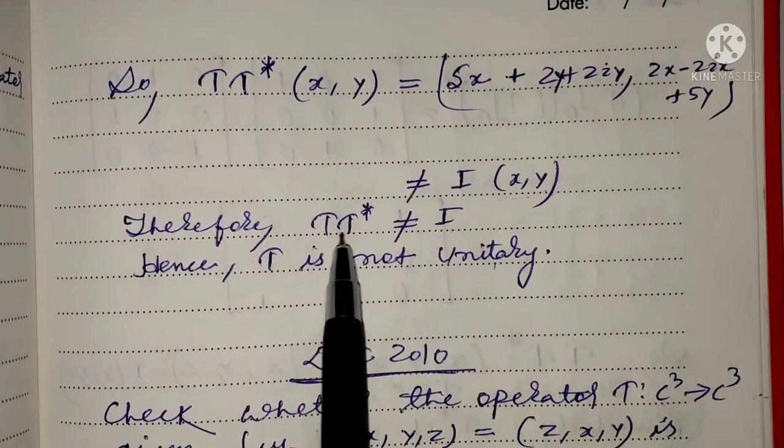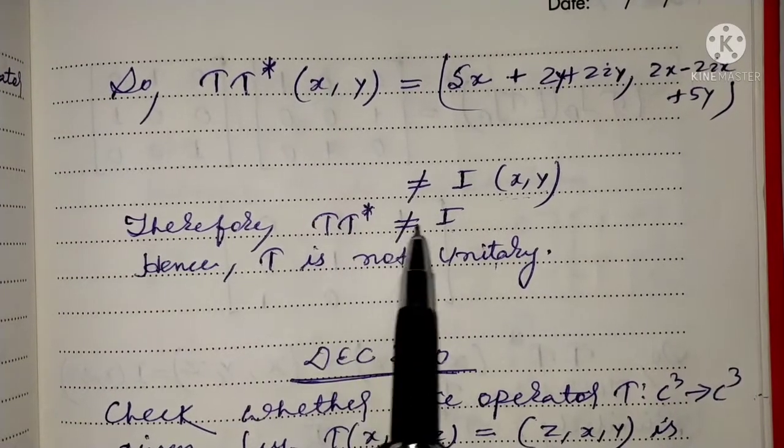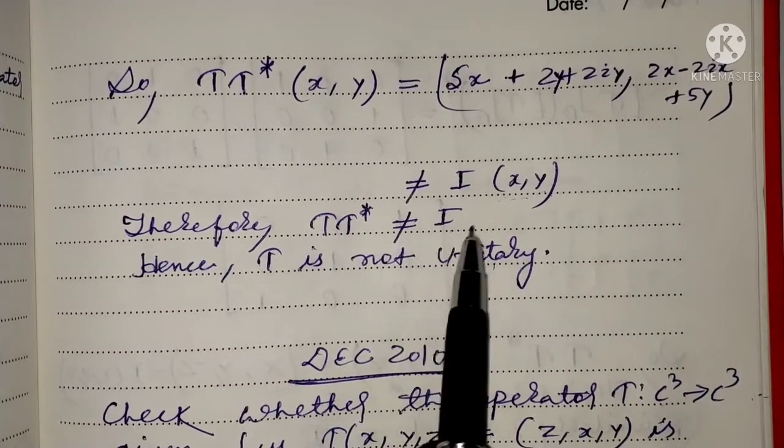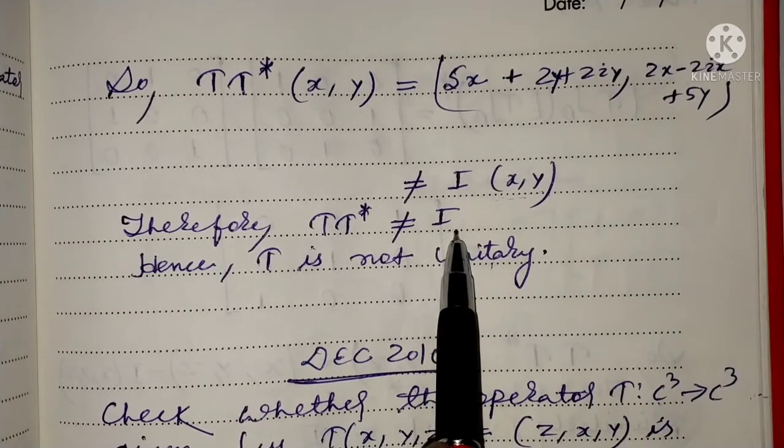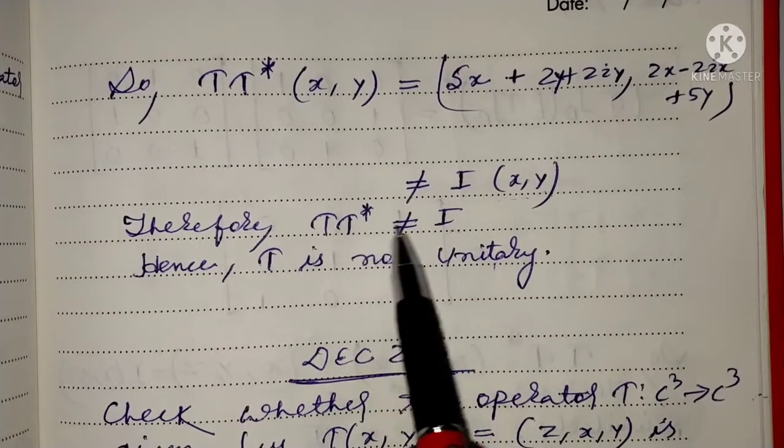For T to be unitary, we need T·t* equal to t*·T equal to I.